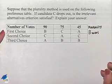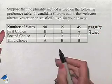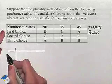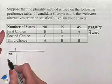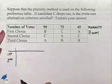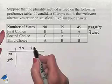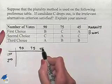Now let's suppose that candidate C drops out. We're going to rewrite our table, and in the table we're only going to be considering first and second place where we eliminate C from the table. So we're going to have our 90, our 75, and our 45.